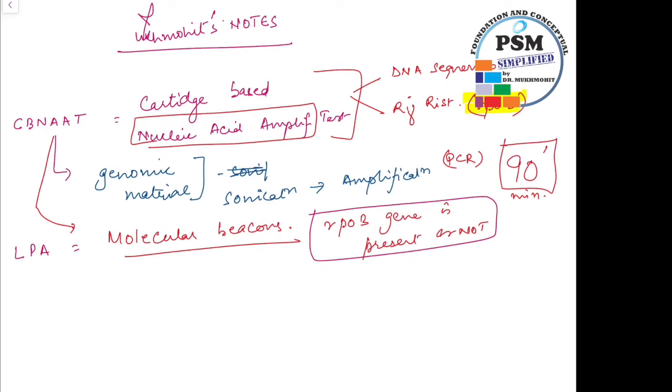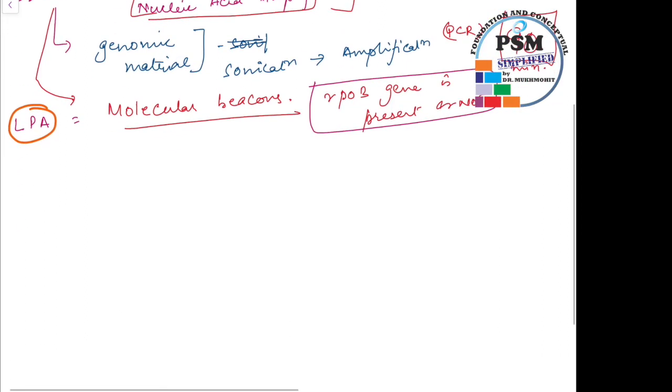So now after learning about CBNAT, let us have a quick look at the LPA. LPA is line probe assay, first MCQ. What is the objective of line probe assay? It is the same. It also detects the DNA sequences from the mycobacterium tuberculosis complex and any mutation which may be associated with the mycobacterium tuberculosis complex. So what is the process of LPA? It's fairly simple and straightforward.